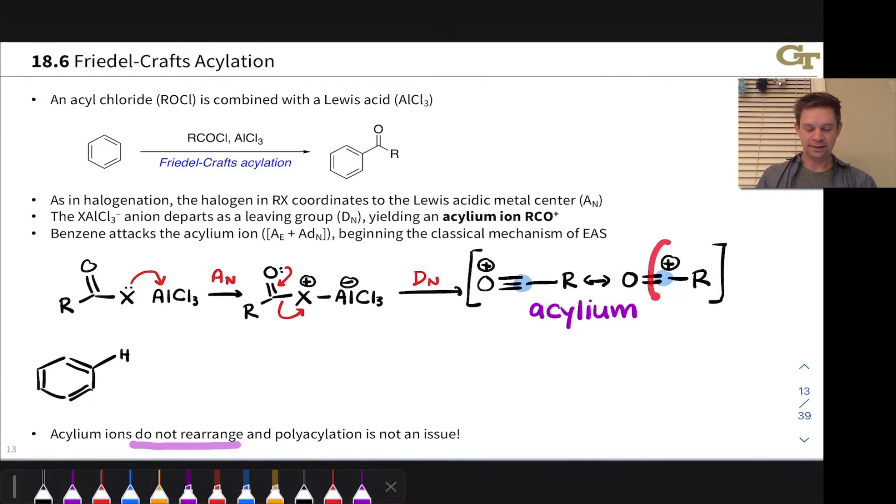One thing to note, and this resonance structure really shows it, is that the carbon in the acylium ion is really the electrophilic atom here. This is really the atom that's going to accept electrons from the benzene ring.